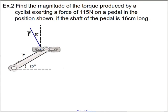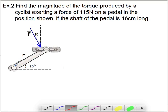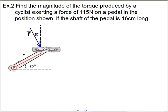So here I have a bicycle pedal. This is another very practical place where most people have some experience with torque. How you push on the bicycle pedal and the position of the pedal actually have a lot to do with how effective the force that you're applying is at causing the wheel of your bicycle to spin. So what is the torque produced by a cyclist exerting a force of 115 newtons on a pedal in the position shown if the shaft of the pedal is 16 centimeters long. So 16 centimeters long means from the point of rotation out to the pedal, that is a vector that is 16 centimeters long. So that's going to be the R vector.